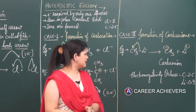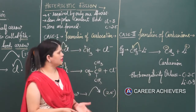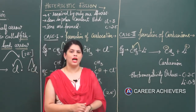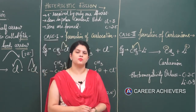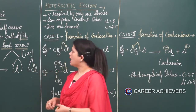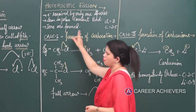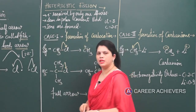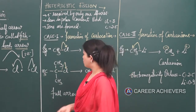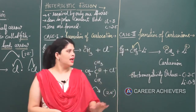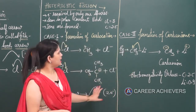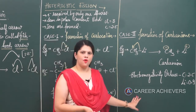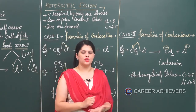So in heterolytic fission, two different charged species — or we can say ions — are formed. Those two ions are carbocation and carbanion.